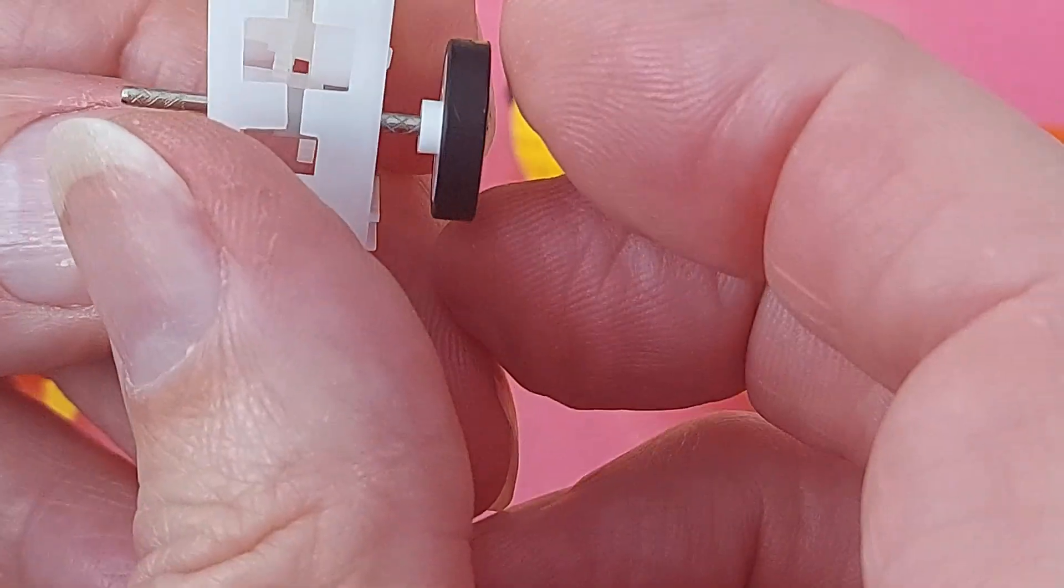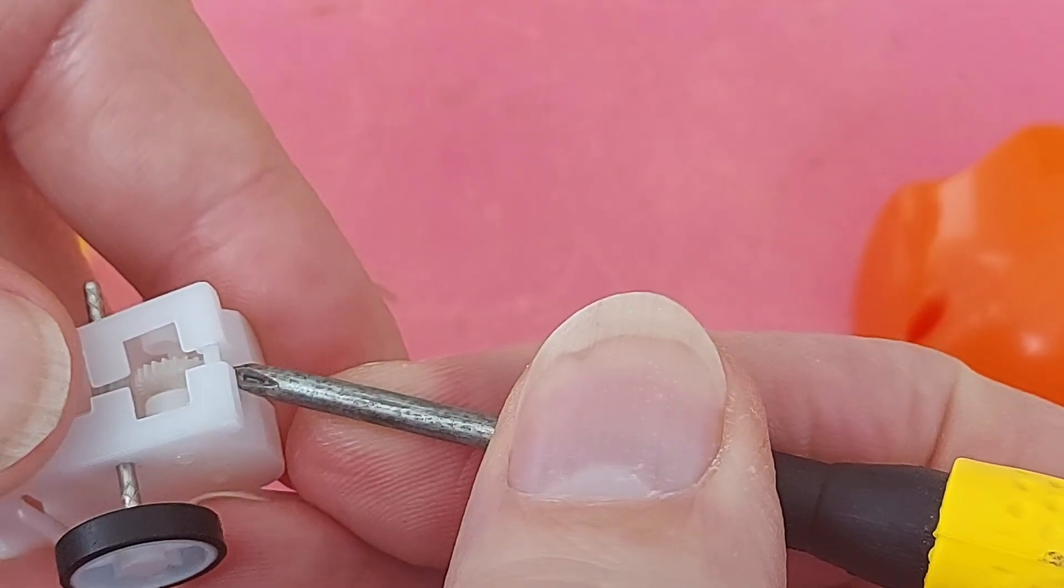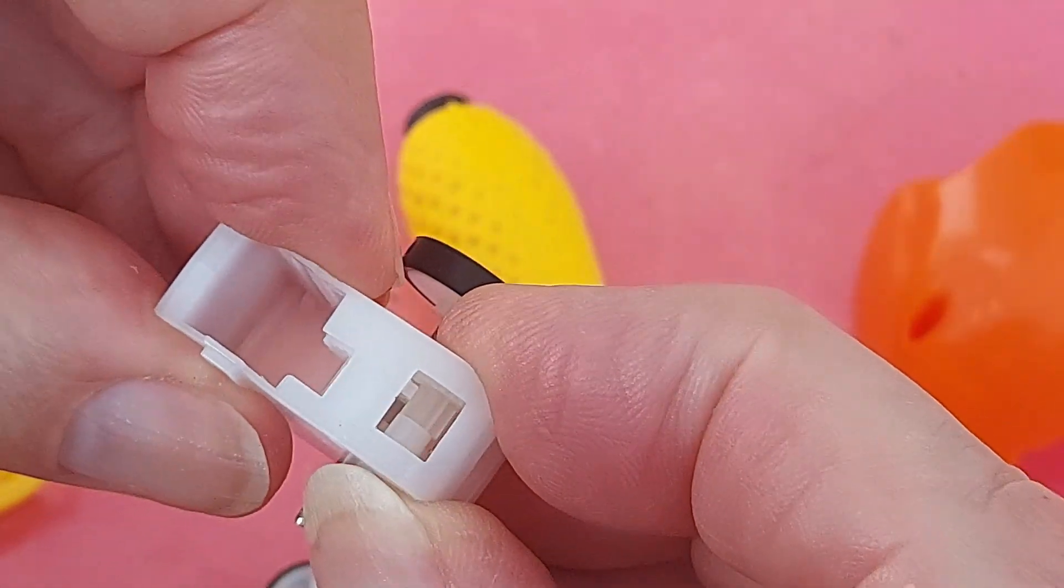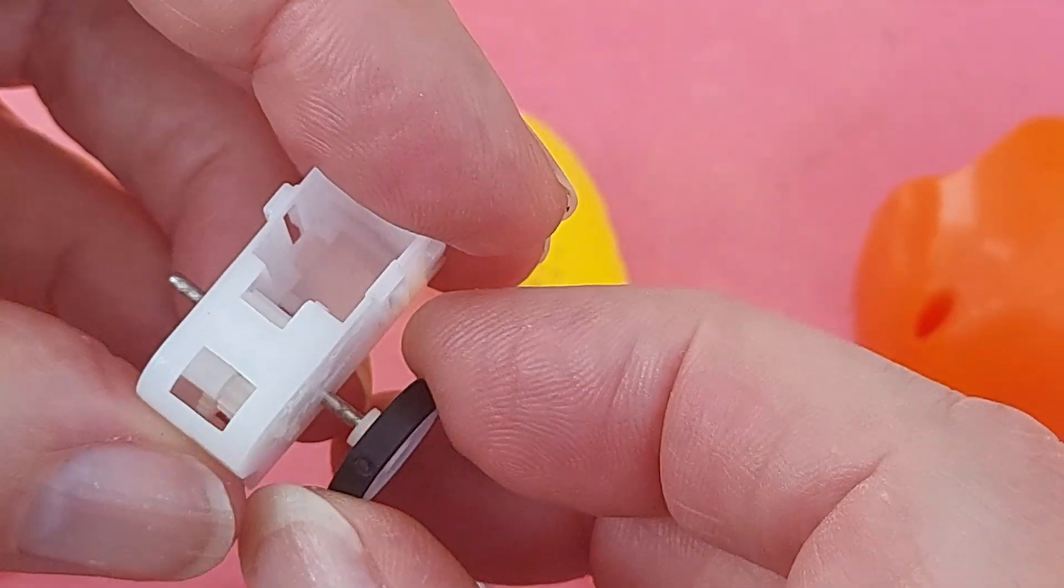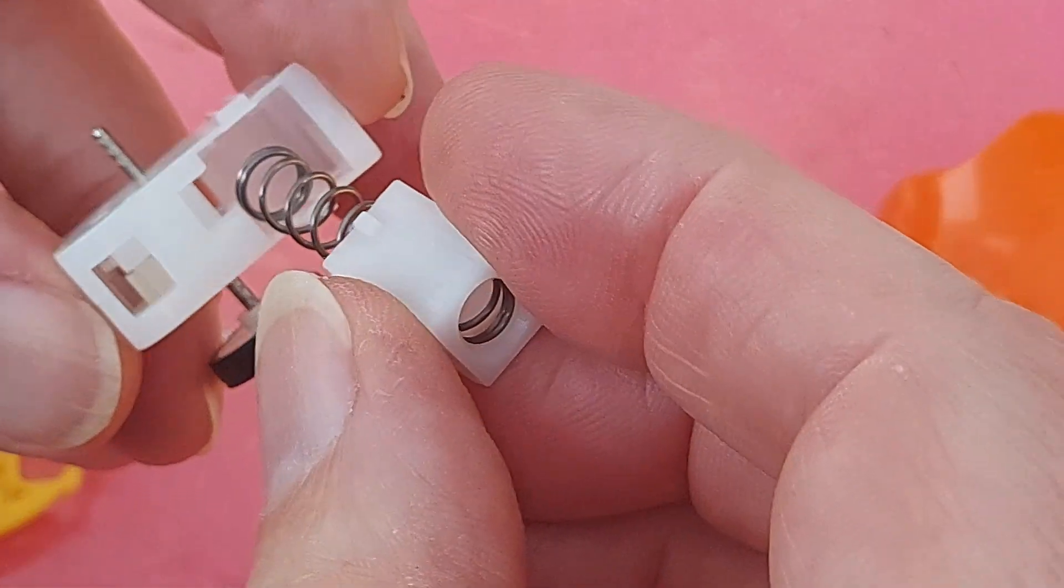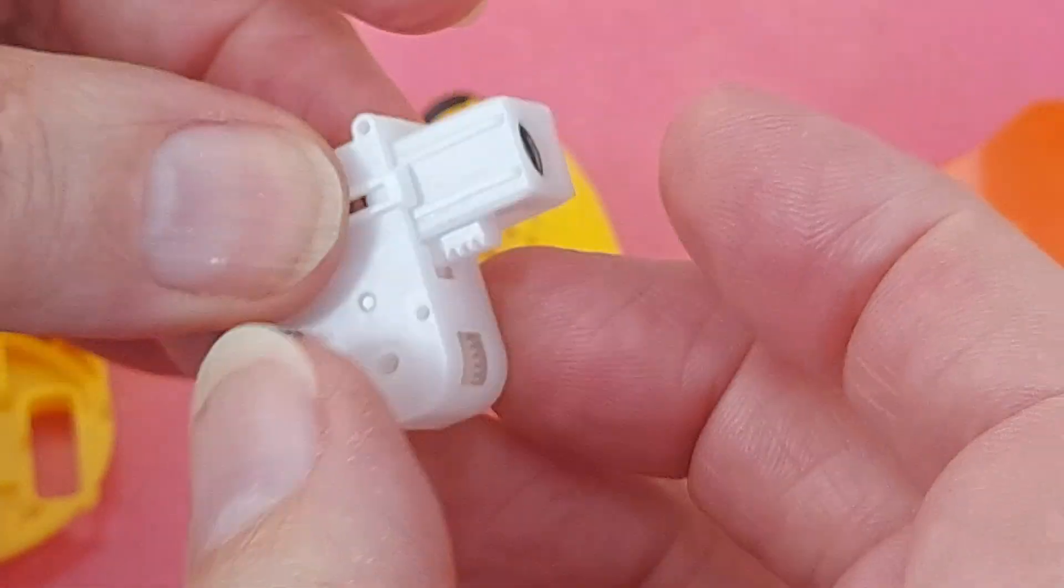One of them is not in. Which one's not in? That one. Poke it over a little bit. There we go. That's back together. That's back in.